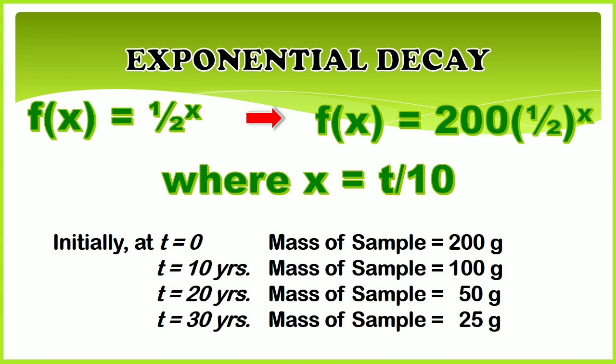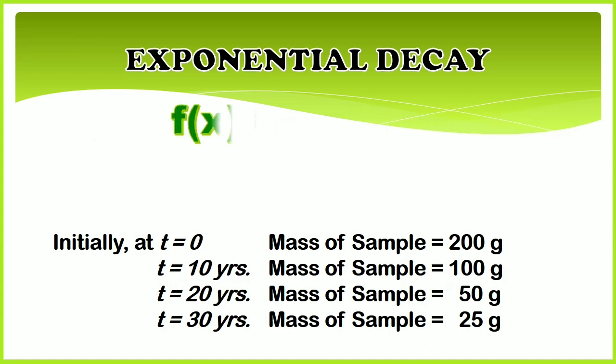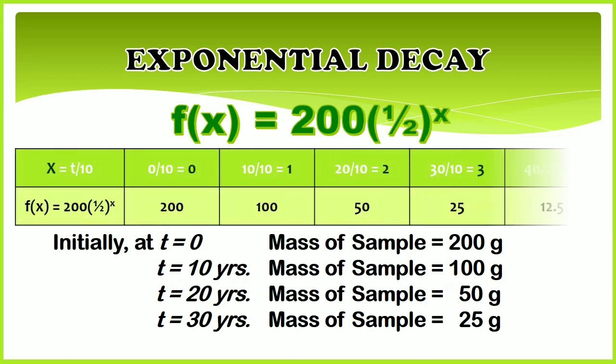This exponential decay is denoted by the function f(x) = 200(1/2)^x. Again, this can be further illustrated if we construct the table of values of ordered pairs. Based on the table of values, the trend is decreasing, which is a manifestation of an exponential decay.